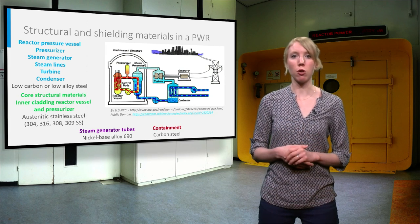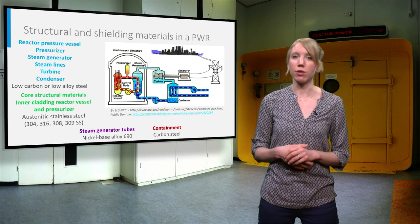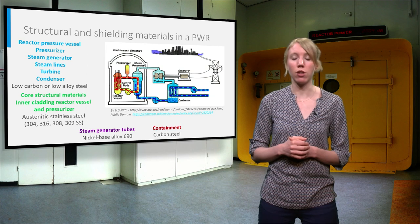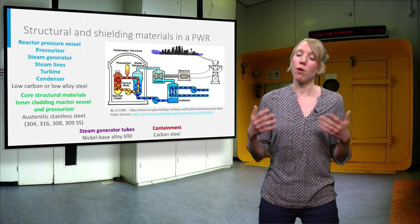The containment structure around the reactor pressure vessel and the steam generator is a gas-tight cylinder or sphere made of carbon steel. Finally, the shield building outside the containment structure is made of concrete.